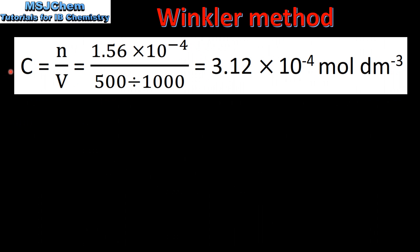Next we will calculate the concentration of dissolved oxygen in moles per decimeter³. Using the equation C equals n over V, where n is the amount in moles of oxygen and V is the volume of water in decimeters cubed. This gives us a concentration of 3.12 times 10 to the negative 4 moles per decimeter³.